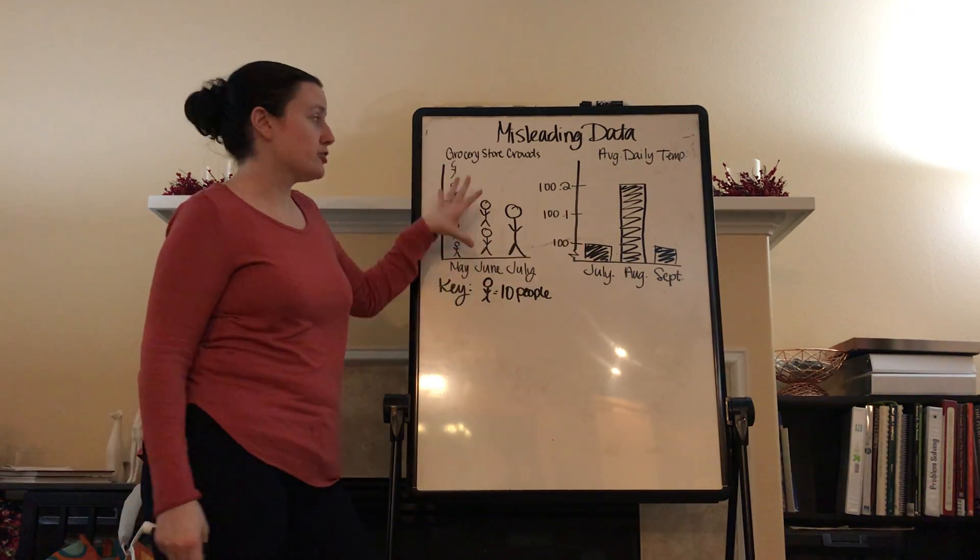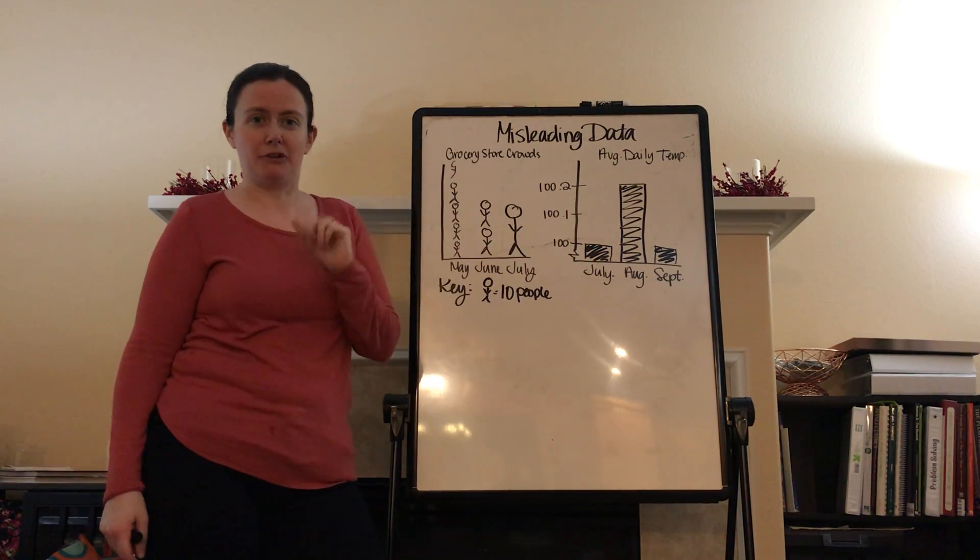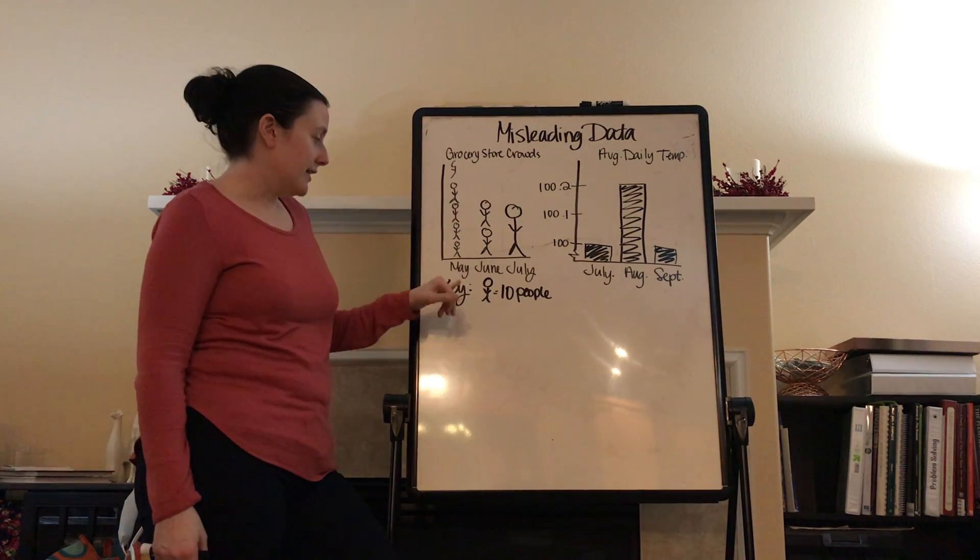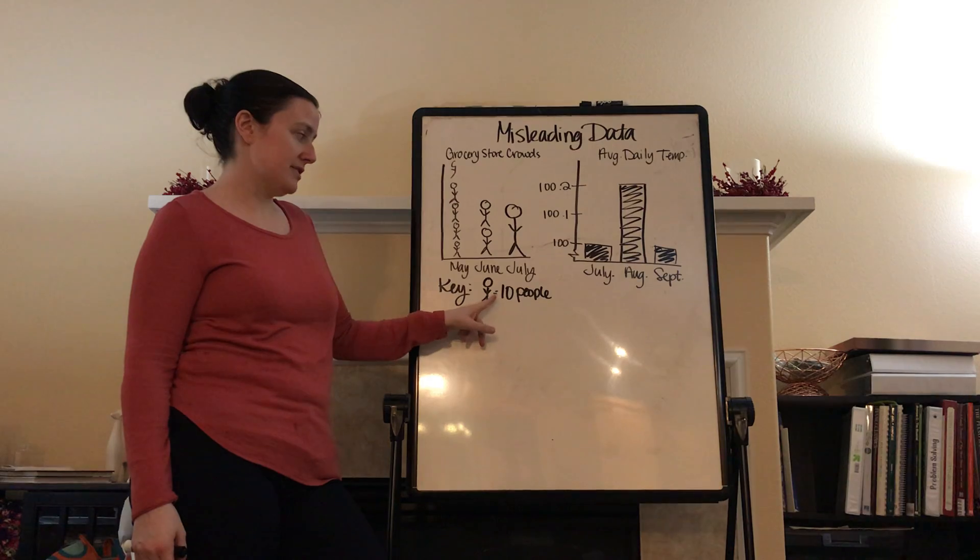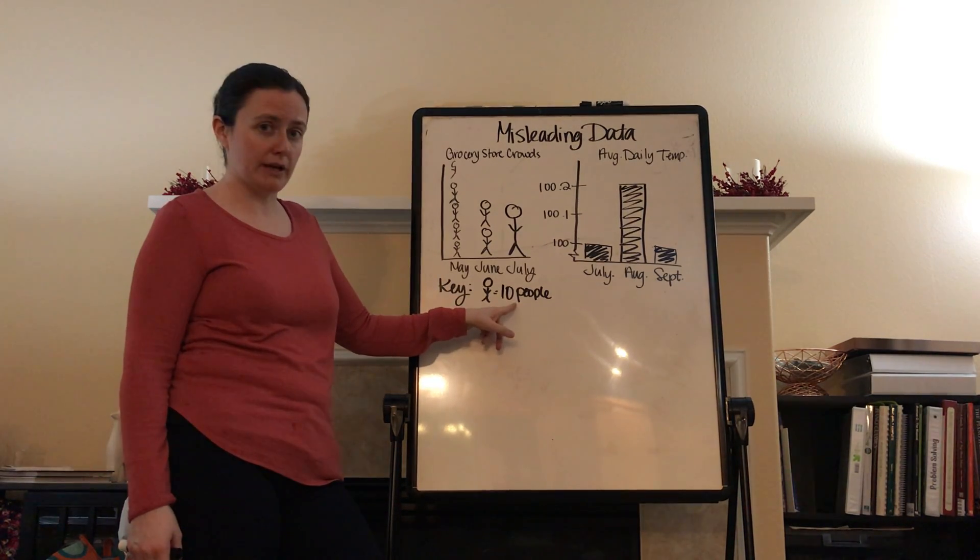Let's take a look at these graphs. Now, both of these graphs that I drew, first I drew a pictograph, then I drew a bar graph. And both of these are misleading. This particular one talks about grocery store crowds, and there's a key at the bottom in my pictograph that says the key is that one person is equal to ten people.